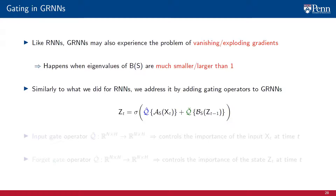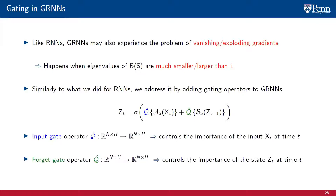We define the gating mechanism in terms of generic operators q-hat(t) and q-check(t). q-hat(t) is the input gate operator, which acts on the input. q-check(t) is the forget gate operator, which acts on the previous state. The input gate operator controls the importance of the input x_t at time t. The forget gate operator controls how much to remember or forget from the previous state c_{t-1}. Observe that neither operator changes the dimensions of the signals to which they are applied.